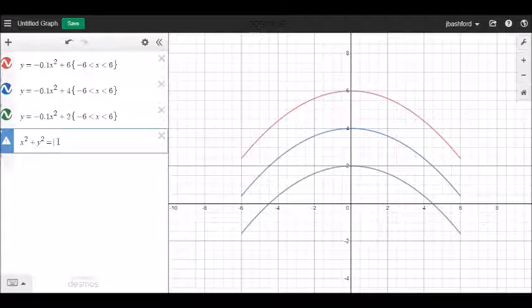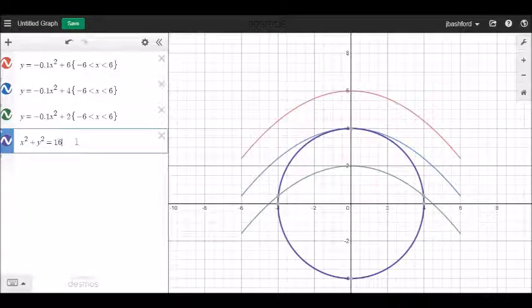So we could have x squared plus y squared equals perhaps 16 something like that and then we get a nice circle and you might remember how the radius of the circle links to this function.